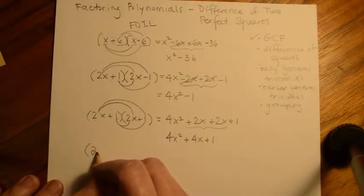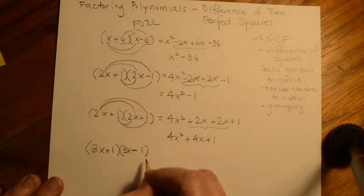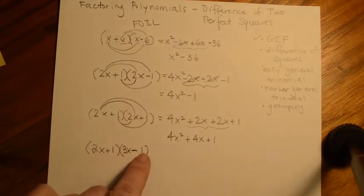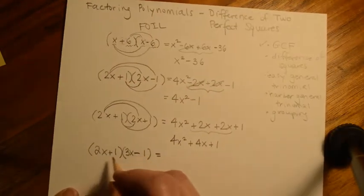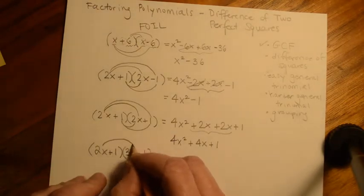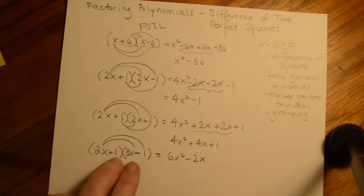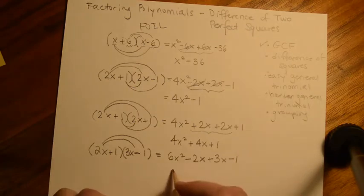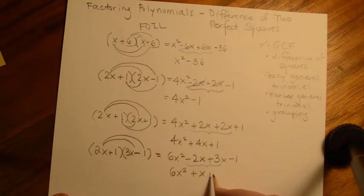Let's do another one: 2x plus 1 times 3x minus 1 — opposite signs but different first terms. 2x times 3x is 6x squared. 2x times negative 1 is negative 2x. 3x times 1 is 3x. And positive 1 times negative 1 is negative 1. Combining: negative 2x and 3x give just x, so we get 6x squared plus x minus 1. Again, no canceling in the center.